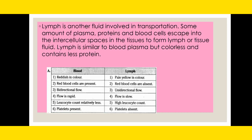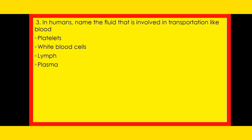The leukocyte count is relatively less in blood, but in lymph there is a high leukocyte count. Platelets are present in blood but absent in lymph. Our third question: In humans, name the fluid that is involved in transportation like blood — is it platelets, white blood cells, lymph, or plasma? The fluid involved in transportation like blood is lymph.